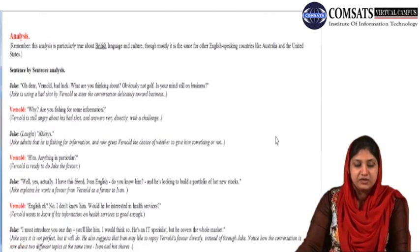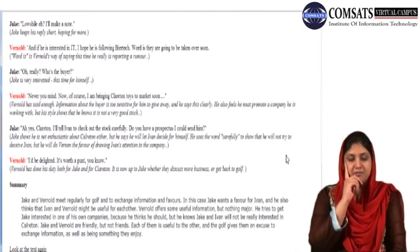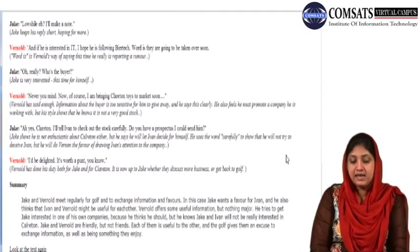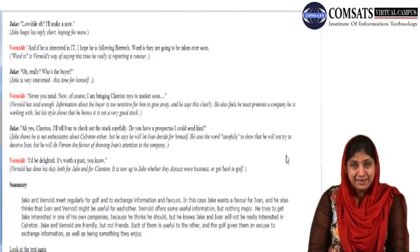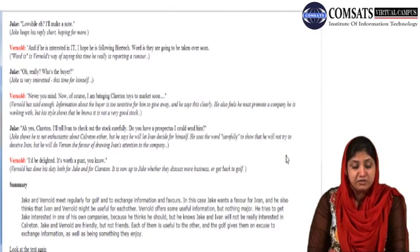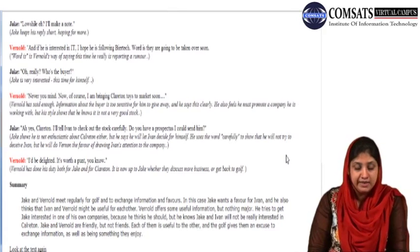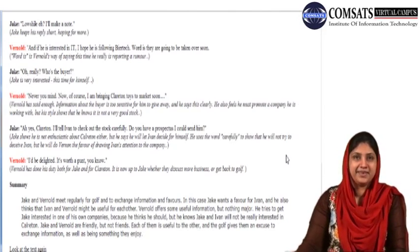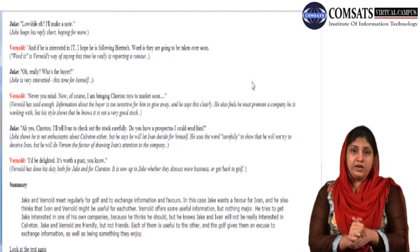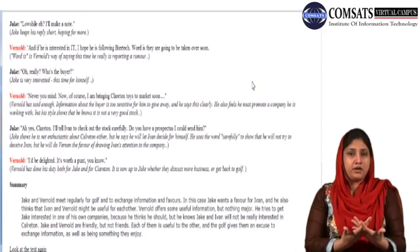The answers to the questions are: Jake and Vernold meet regularly for golf and to exchange information and favors. In this case, Jake wants a favor for Ivan, and he also thinks that Ivan and Vernold might be useful for each other. Vernold offers some useful information but nothing major. He tries to get Jake interested in one of his own companies because he thinks he should, but he knows Jake and Ivan will not be really interested in Clareton. Jake and Vernold are friendly but not friends. Each of them is useful to the other and the golf gives them an excuse to exchange information as well as being something they enjoy.